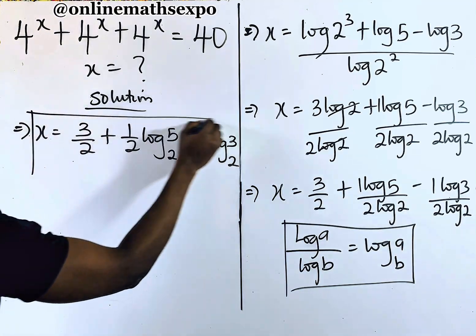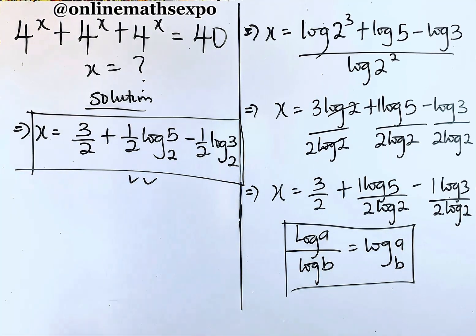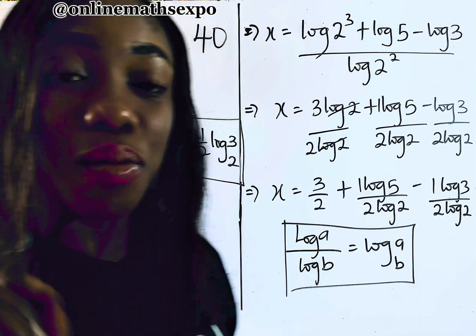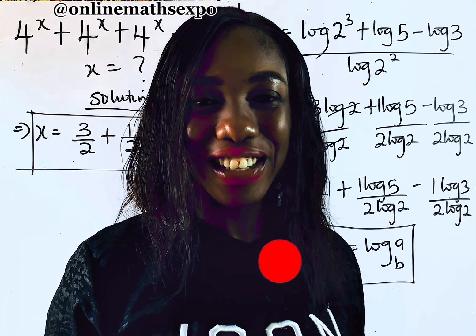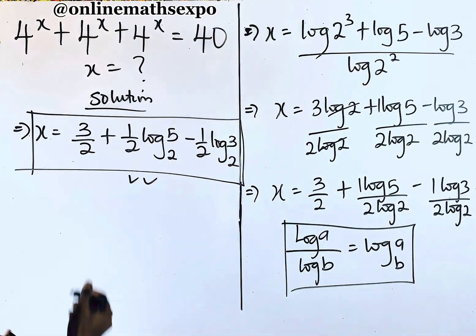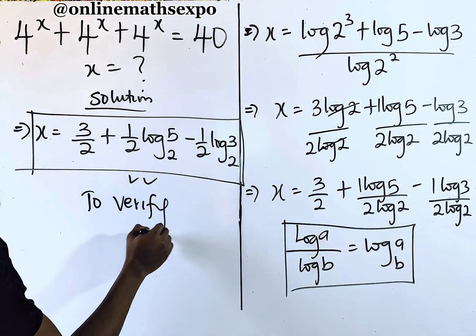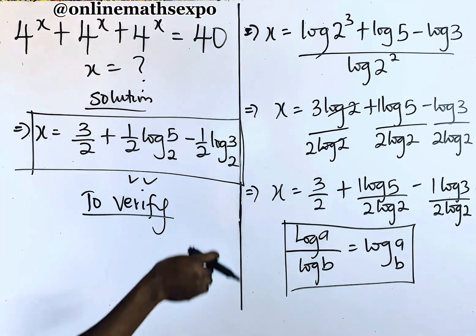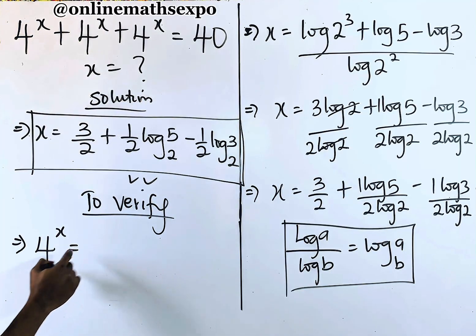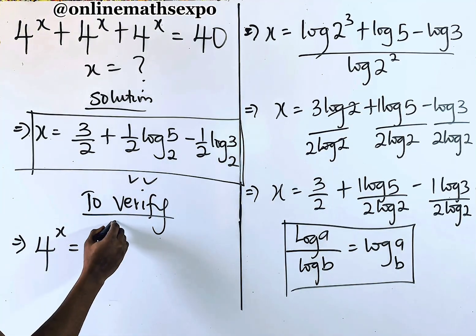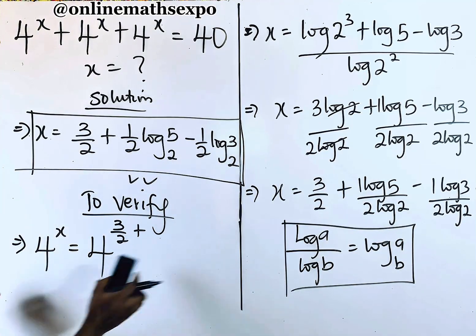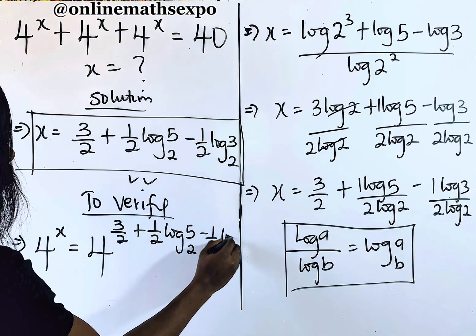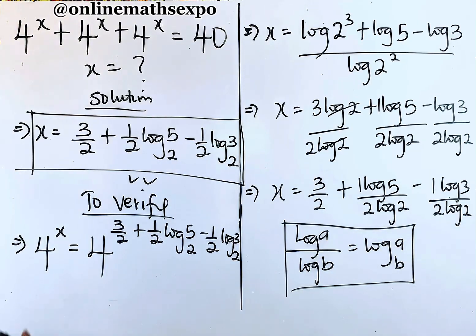And this gives us the simplified value of x. We are going to plug this value of x back into the left side to verify it gives us 40 — and that is the most interesting part. Let's do this together. To verify, since the three terms are the same, we are going to work with 4 to the power of x first. And 4 to the power of x, substituting our x, gives us 4 to the power of 3 over 2 plus one-half log 5 base 2 minus one-half log 3 base 2.